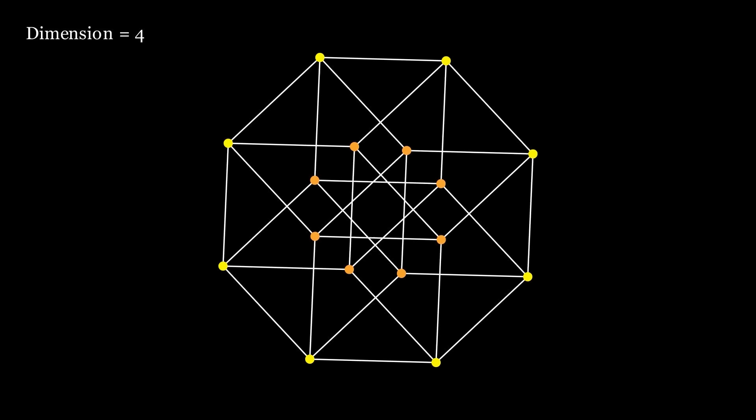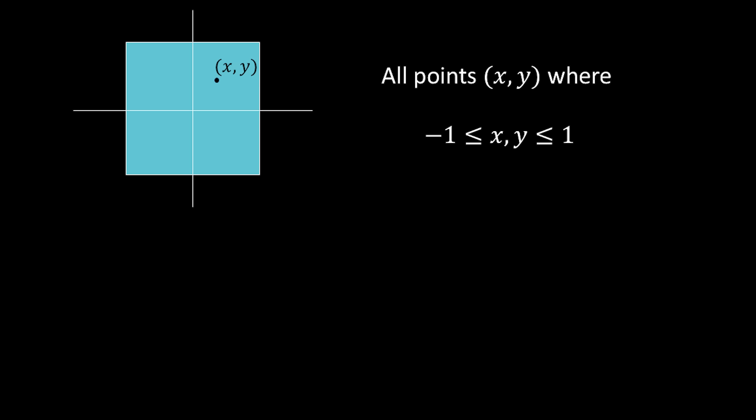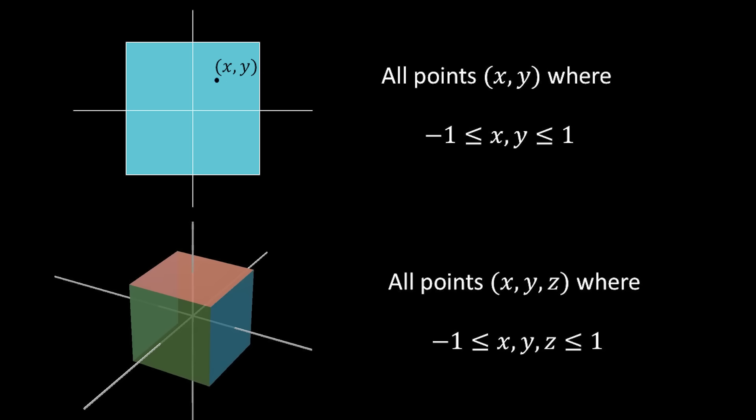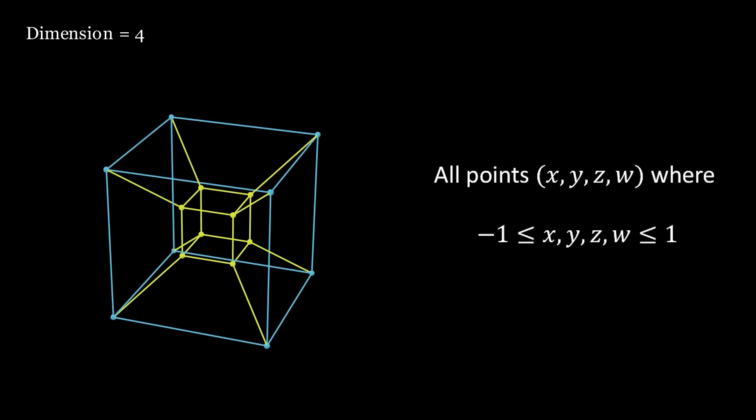What even is a higher dimensional cube? Like, here's a square. A square just consists of all points x and y, in this case, where x is between minus one and one, and the same for y. Same for 3D, it's just a list of three numbers x, y, z, where each coordinate is between minus one and one. So, a four dimensional cube isn't mysterious. It's just a list of four numbers now, x, y, z, and w, for the fourth dimension. And each number has to be between minus one and one. Kind of boring, to be honest.